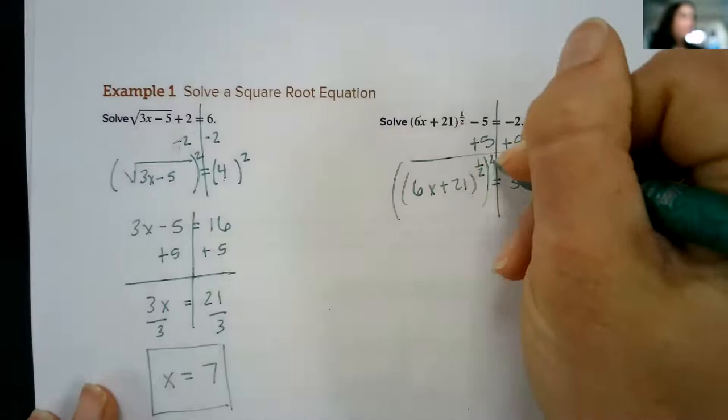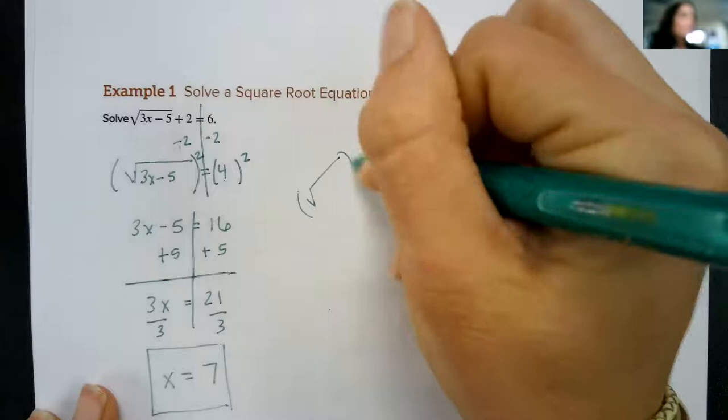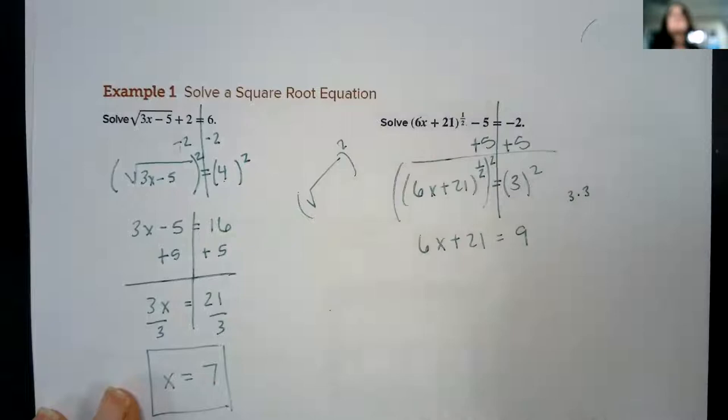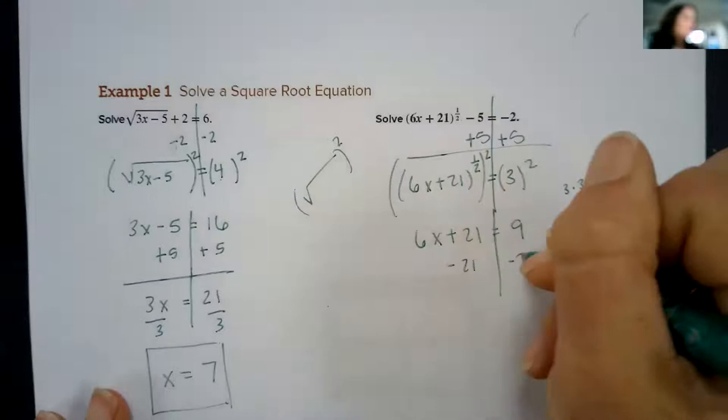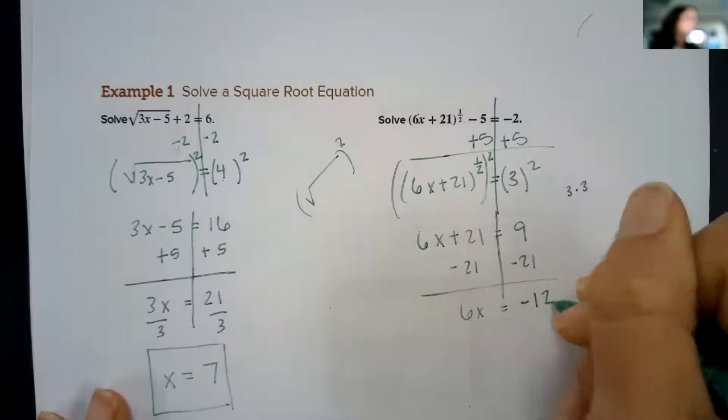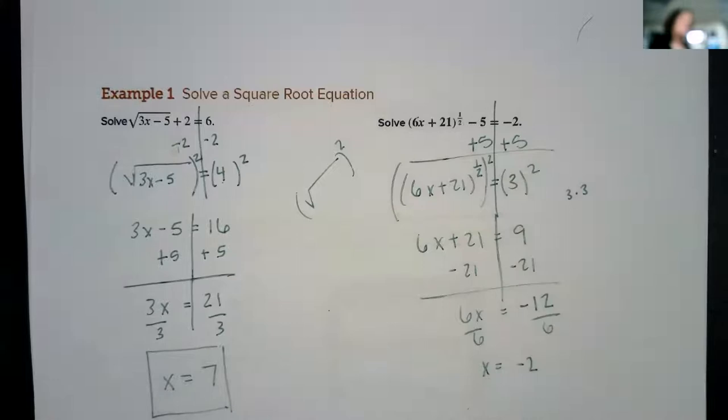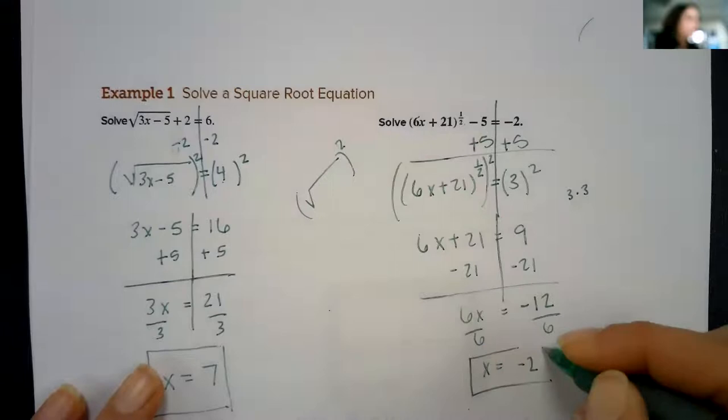When I raise it to a power, I raise it to a power of 2, just as if it was a square root and I was raising it to a power of 2. It'll cancel, so I'm gonna have 6x plus 21 equals 9. Don't forget 3 squared, that means 3 times 3, not 3 times 2. Subtract 21 from both sides gives me 6x equals negative 12. Divided by 6, x would be negative 2. Check real quick, make sure this doesn't give us a negative in here. Negative 2 times 6 would be negative 12 plus 21 will be a positive 9, so we're good to go.